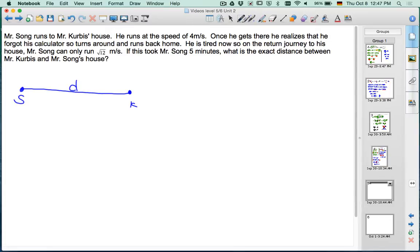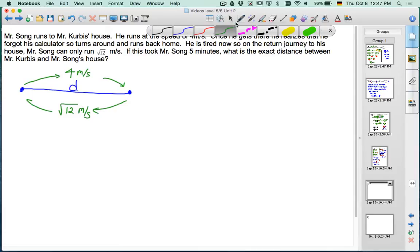On the journey there, I run 4 meters per second. On the way back, it was square root of 12 meters per second. And the same distance covered. So D is the same in both cases, because we're going from Mr. Song's house to Mr. Kervis's and then back. And we know it took 5 minutes total.